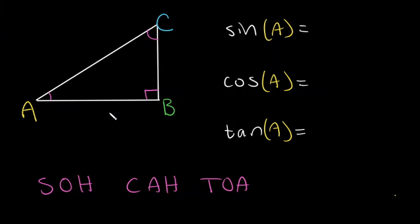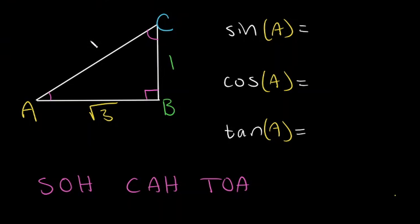Let's go ahead and add some values to the lengths of these sides so we can actually evaluate sine, cosine, and tangent. So this side is going to be the square root of 3, this side will be 1, and our hypotenuse will be 2. Let's go ahead and evaluate these with some numbers.